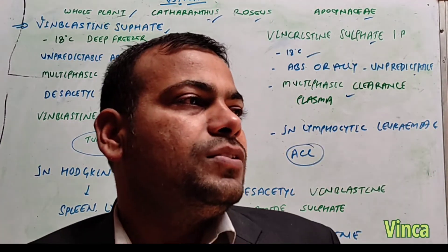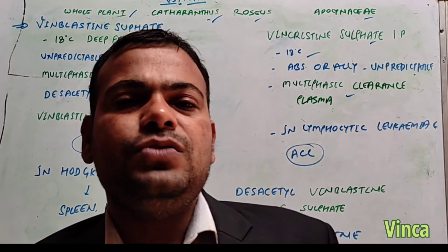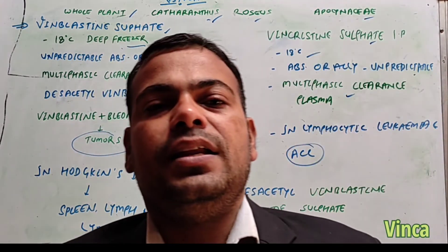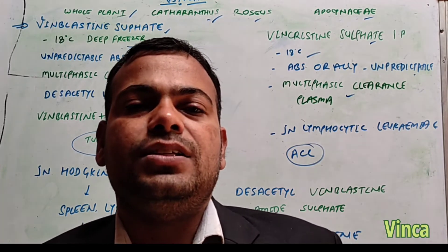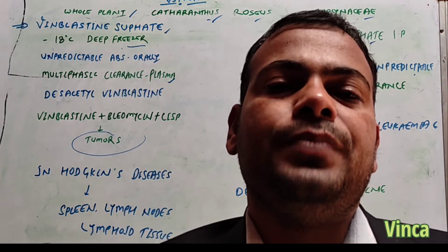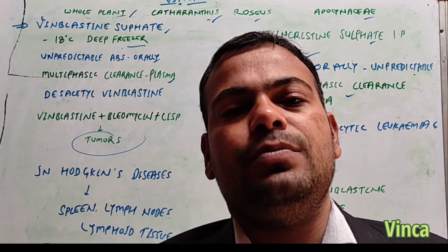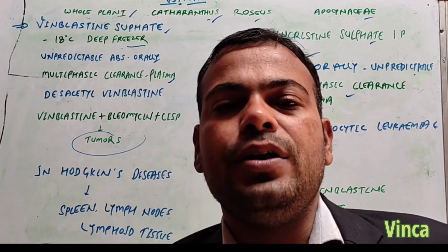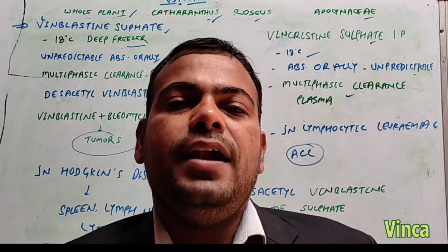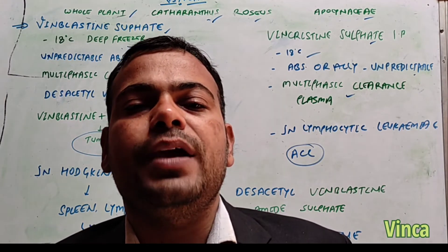Vinca from Catharanthus roseus of the Apocynaceae family is used in the treatment of cancer-related diseases. Vincristine and vinblastine are the active pharmaceutical ingredients used for various types of chronic cancer treatment, including Hodgkin's disease, non-Hodgkin's lymphoma, chronic leukemia, and acute leukemia in children.